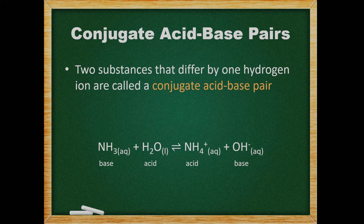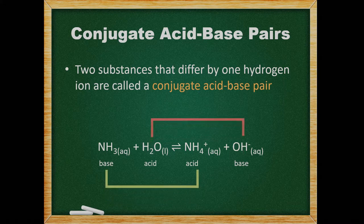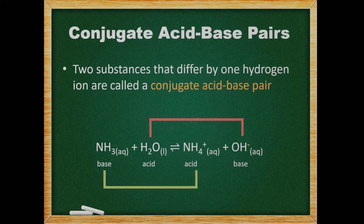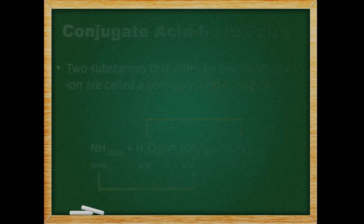There are two acids and two bases in a Bronsted-Lowry equilibrium. An acid and base react to form another acid and base. The ammonia and ammonium are one conjugate pair, as are the water and hydroxide.